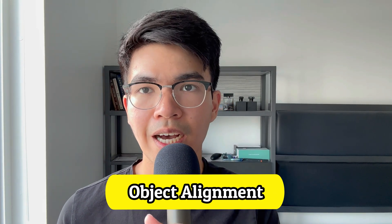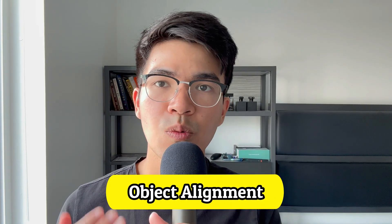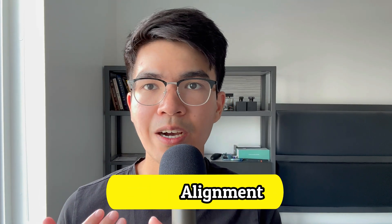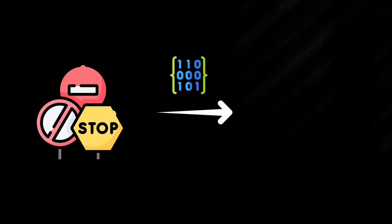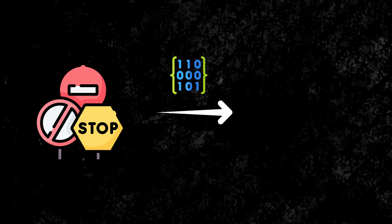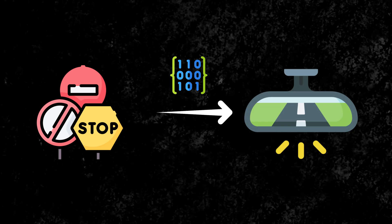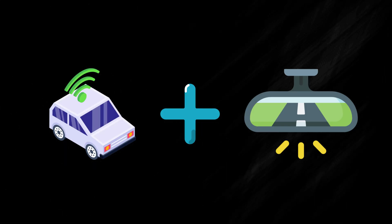Finally, we have object alignment. Once we detect co-visible objects, we find a transformation matrix to transform the infrastructure point cloud to the vehicle's view, and then merge them together. This project taught me many valuable lessons, and I believe these lessons will be valuable if you want to build any complex software project.